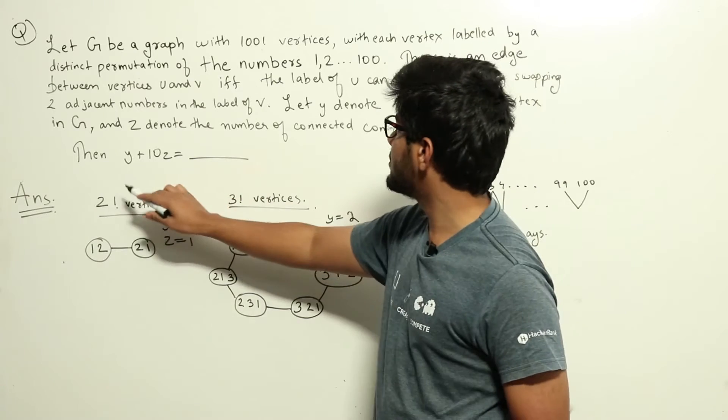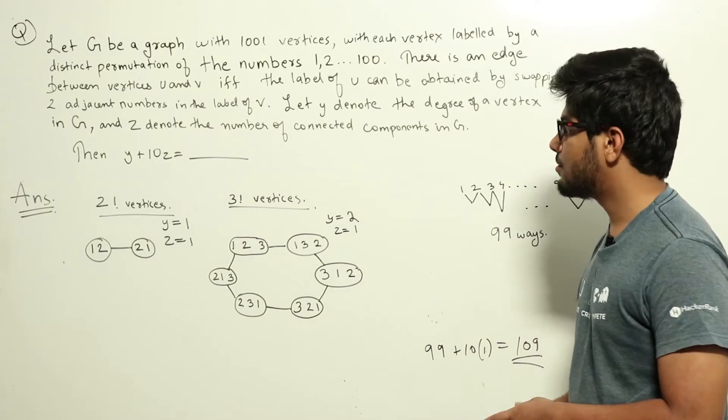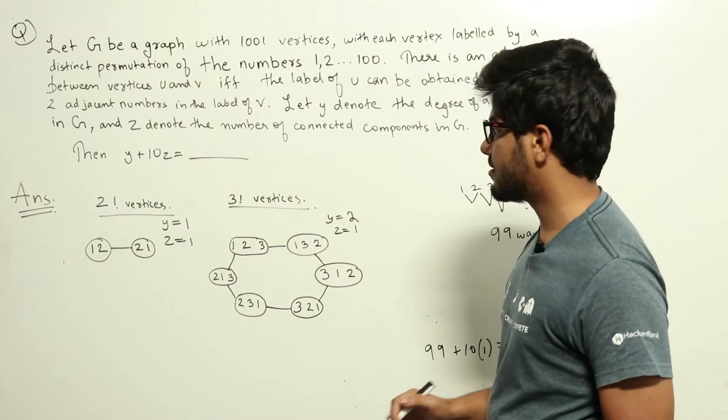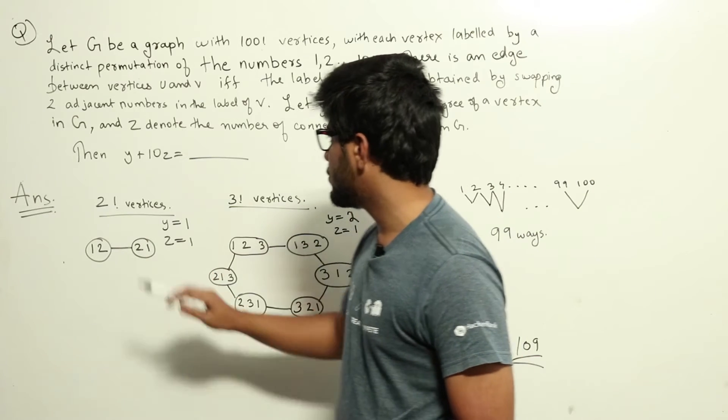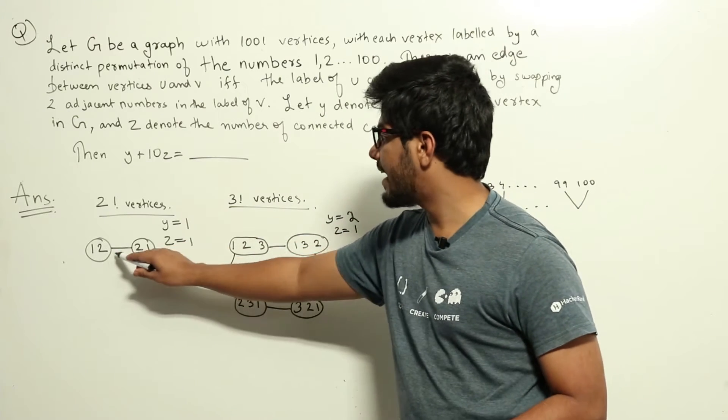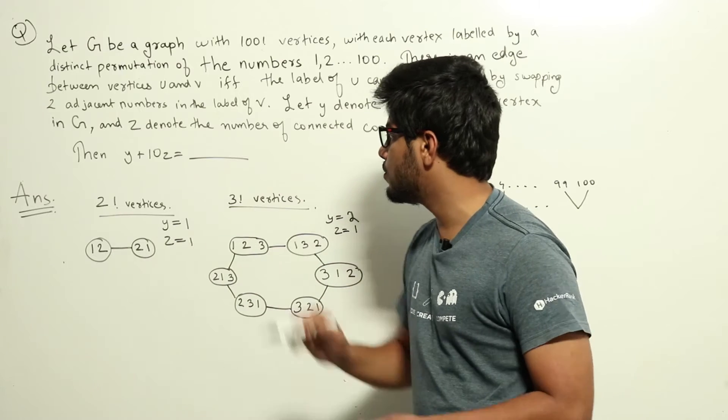So I'll try to draw a graph with two factorial vertices first. Now two factorial is 2. There will be two vertices. That will be 1, 2 and 2, 1. So how can we add an edge between two vertices?